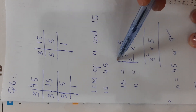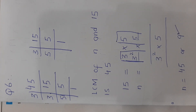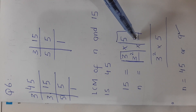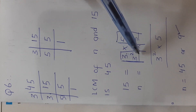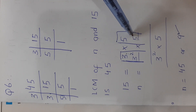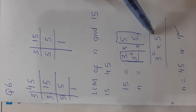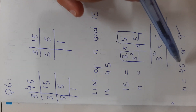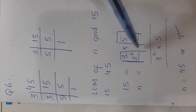Take the maximum power from each column. Case 1: n = 3² × 5. When taking maximum powers — 3² from n and 5¹ from both — the LCM becomes 9 × 5 = 45. We need LCM = 45, and we can get it using this combination.